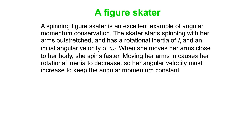Let's look at that familiar example of angular momentum conservation — a figure skater. The skater starts spinning with her arms outstretched, with an initial rotational inertia of I-initial and an initial angular velocity of omega-initial. When she moves her arms close to her body, she spins faster. Moving her arms in causes her rotational inertia to decrease, and to keep the angular momentum constant, her angular velocity must increase.